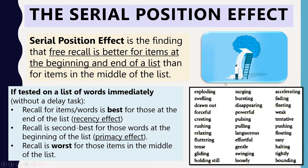If tested immediately without delay, recall for items at the end of the list is best — those words are still fresh in short-term memory. Recall is worst for words in the middle, which is always the case regardless of delay. Words at the beginning also show good recall — this is the primacy effect — because they received the most attention and transferred into long-term memory.